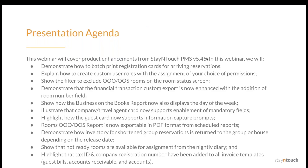Today's presentation will cover how you can get the most out of Stay in Touch Cloud PMS Version 5.45 product release. In this webinar, we will demonstrate how to batch print registration cards for arriving reservations, explain how to create custom user roles with the assignment of your choice of permissions, show the filter to exclude out of order and out of service rooms on the room status screen, demonstrate that the financial transaction custom export is now enhanced with the addition of room number field, and show how the business on the books report now also displays the day of the week. We'll also illustrate that company and travel agent cards now support enablement of mandatory fields, and highlight how the guest card now supports information capture prompts. The rooms out of order and out of service report is now exportable in PDF format from scheduled reports.